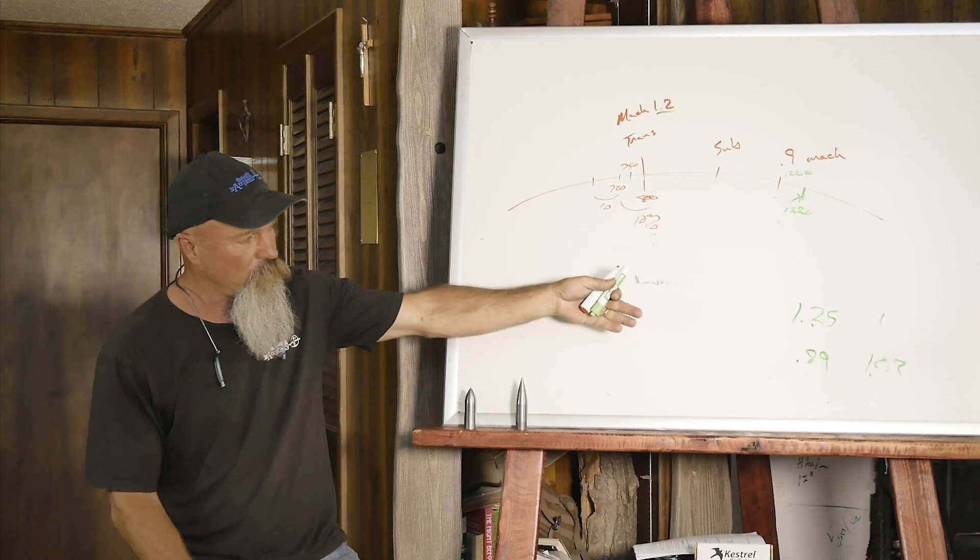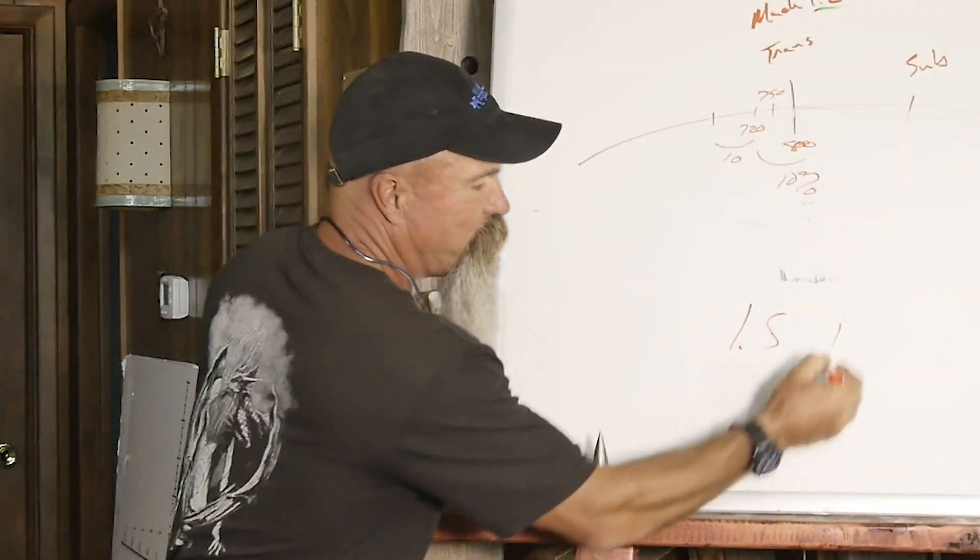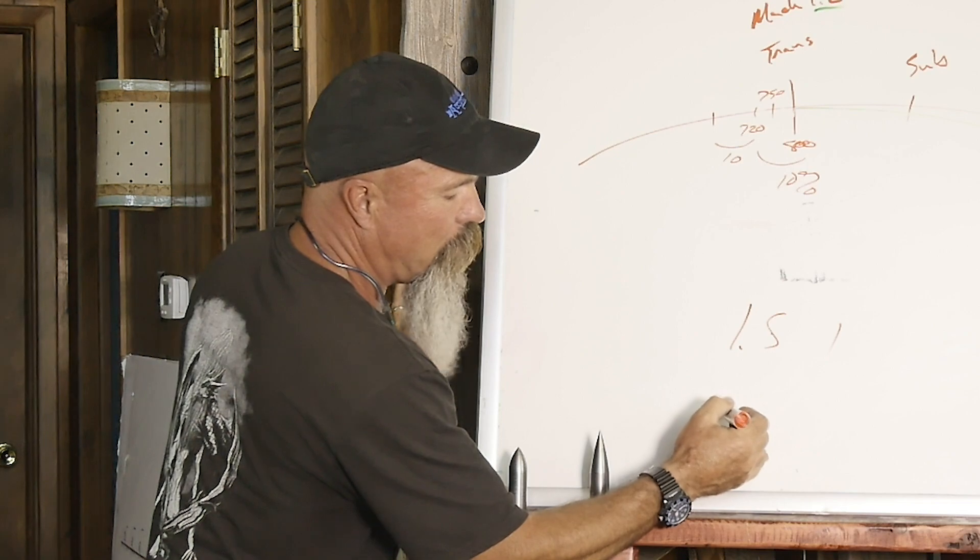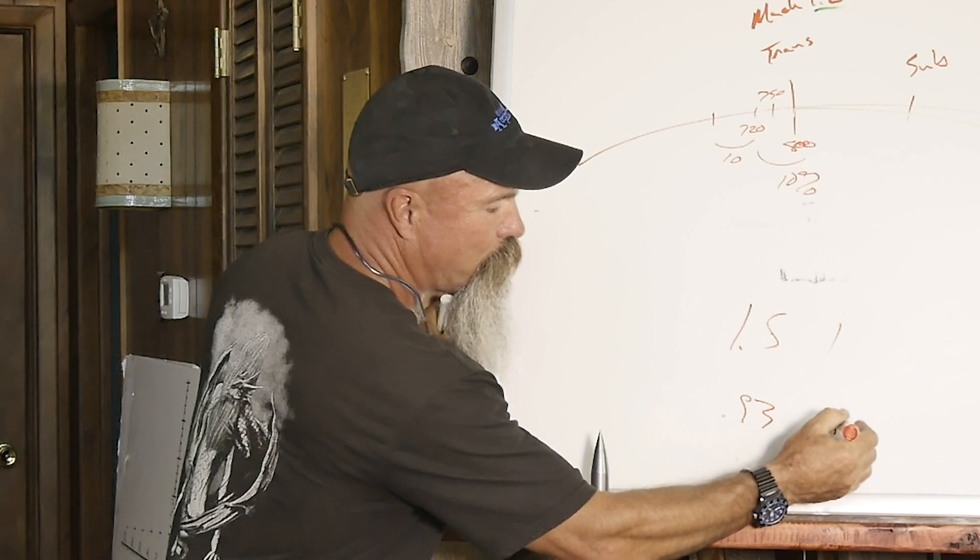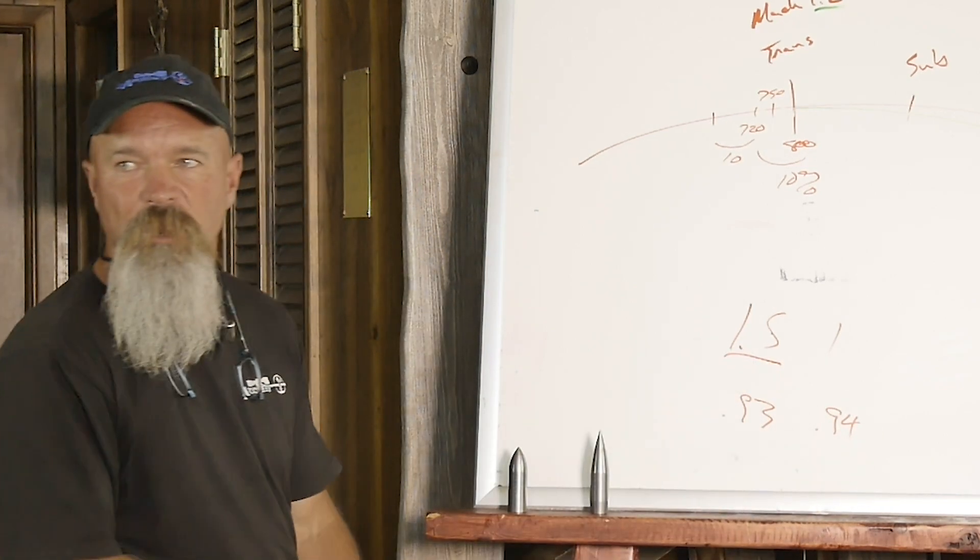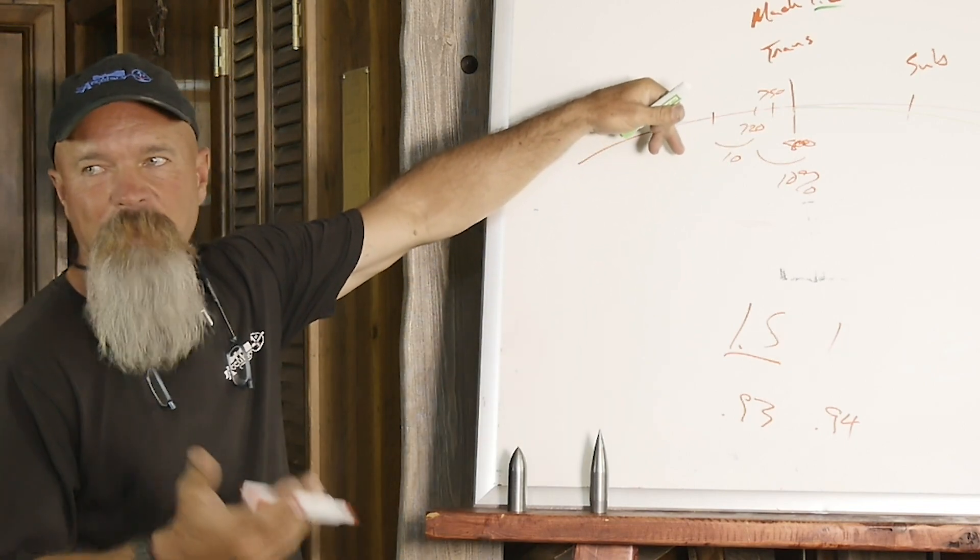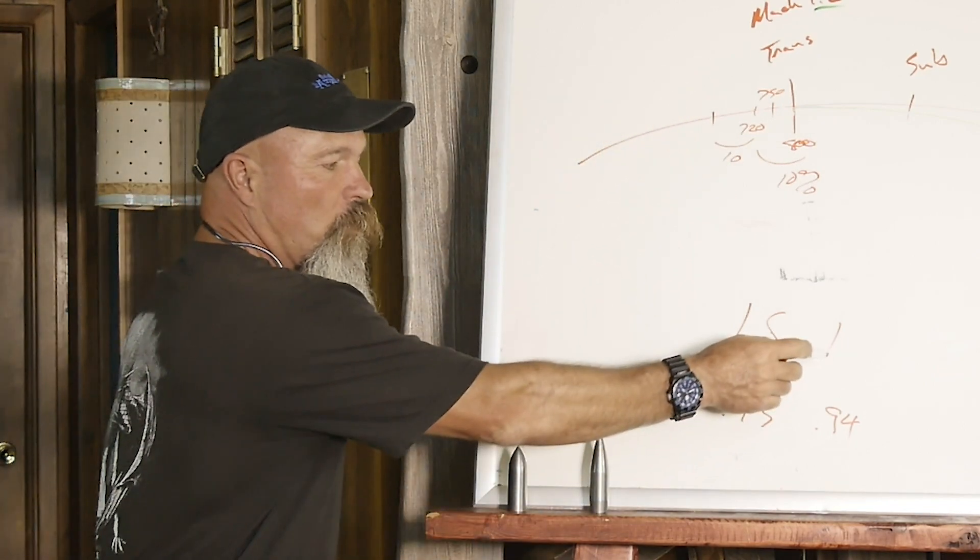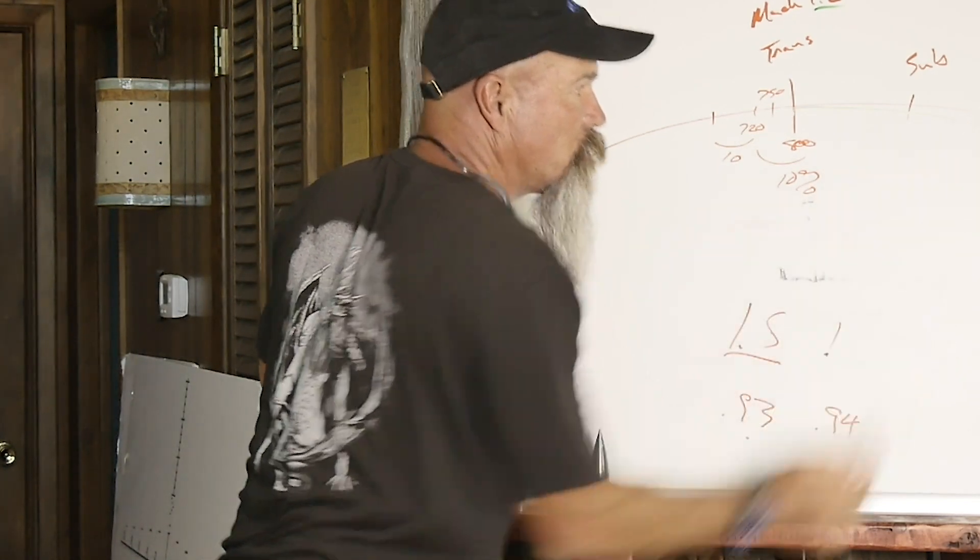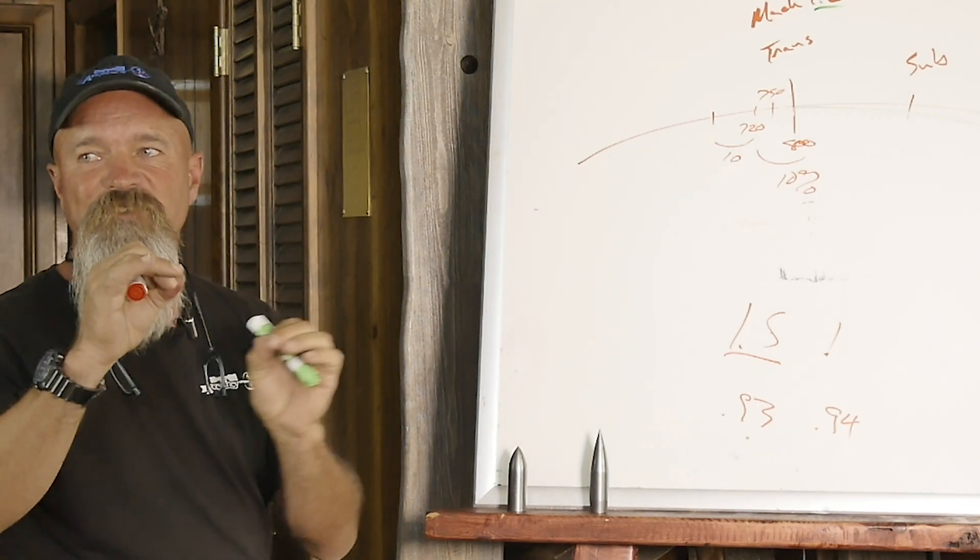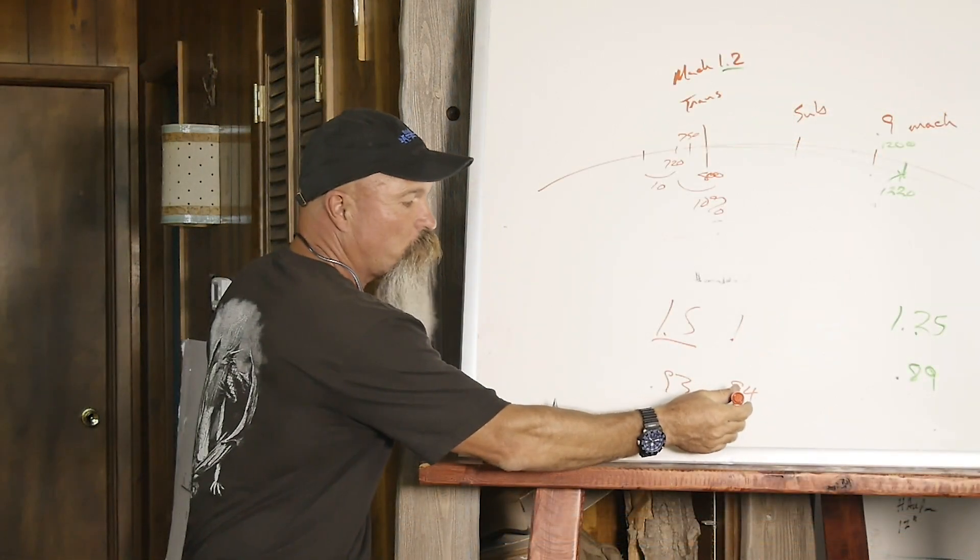But if you ended up seeing 1.5 and 1 and then maybe 0.93 and 0.94, this means you trued way too close. You didn't go out to here. You trued at 1.5 mock speed at maybe 550 meters. This is always going to be 1. 0.93 means you didn't true here. You trued somewhere in here. So it was inside. So the cone of fires may not have separated enough for you to have good resolution where your bullet actually hit.